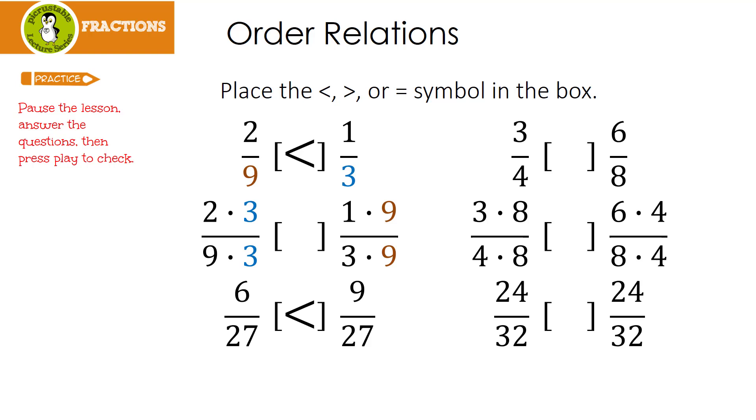Well, the bottoms are the same. That's great. So let's look at the tops. They're exactly the same. So do you know what that means? It means that 3 fourths is exactly the same as 6 eighths. They're equivalent.